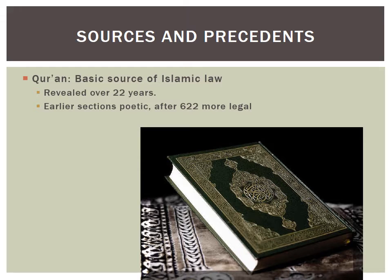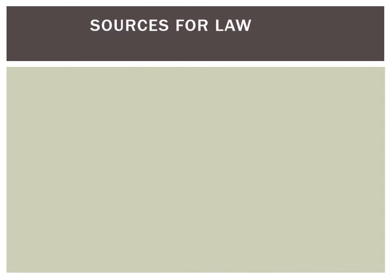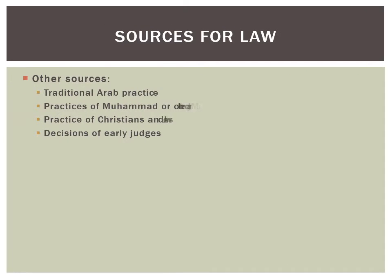Islamic law is based on four sources. The idea that these four sources are used goes back to al-Shafi'i in the 800s. The basic source of Islamic law is the Quran, revealed over 22 years. Early Muslims debated other sources of law in addition to the Quran: traditional Arab practice, the practice specifically of Muhammad or the practices of all early Muslims, the practices of monotheists prior to Islam, and the decisions of early judges.